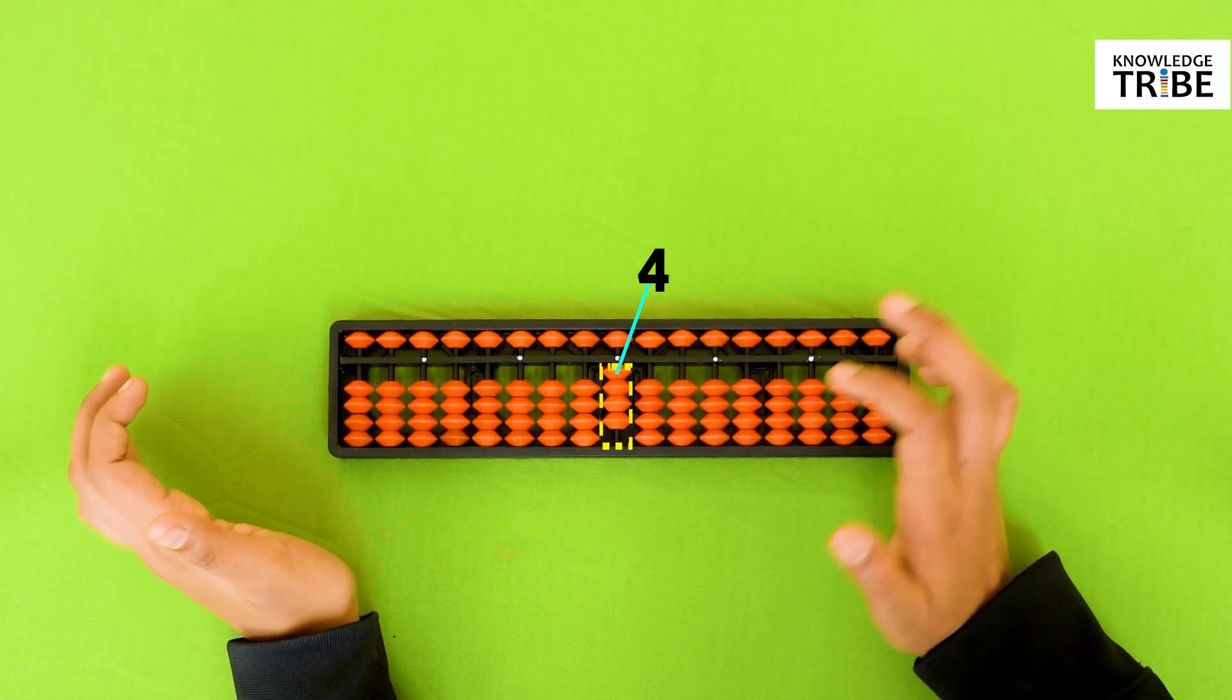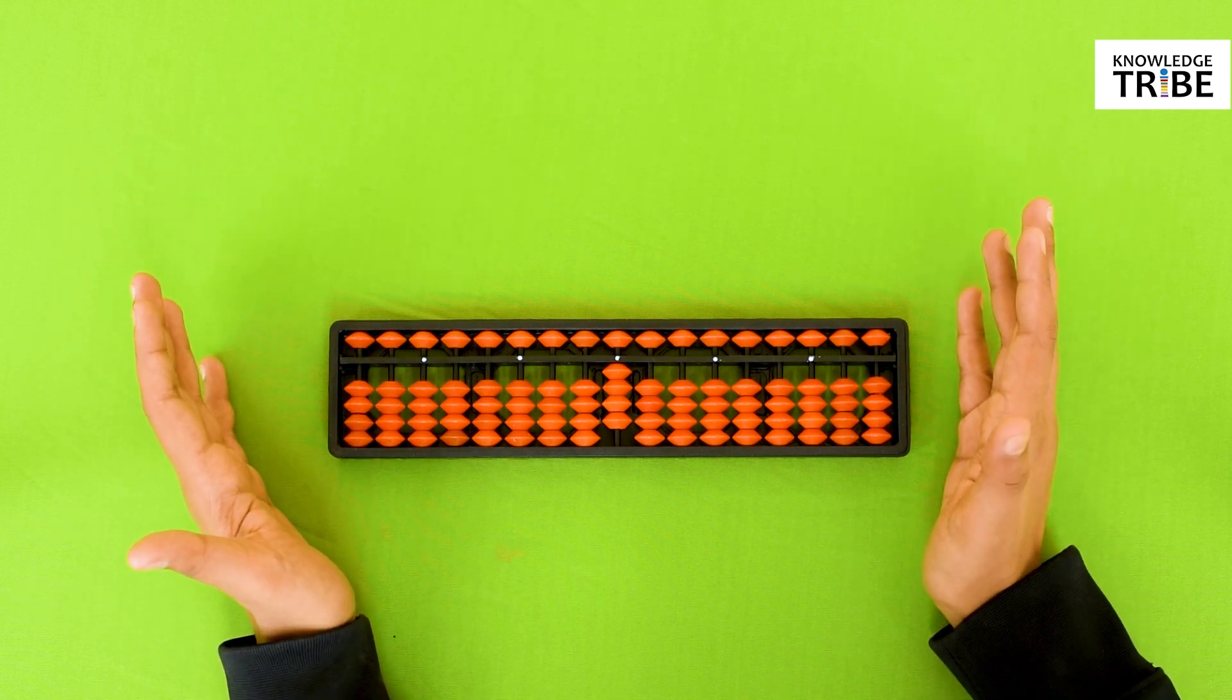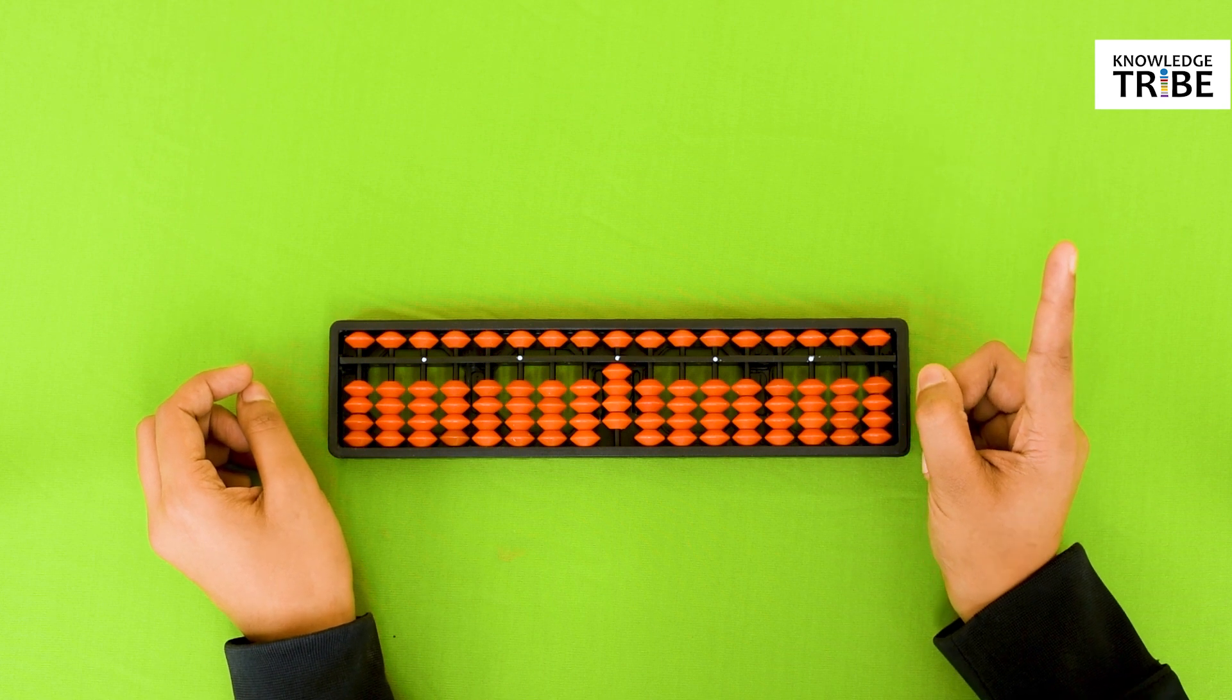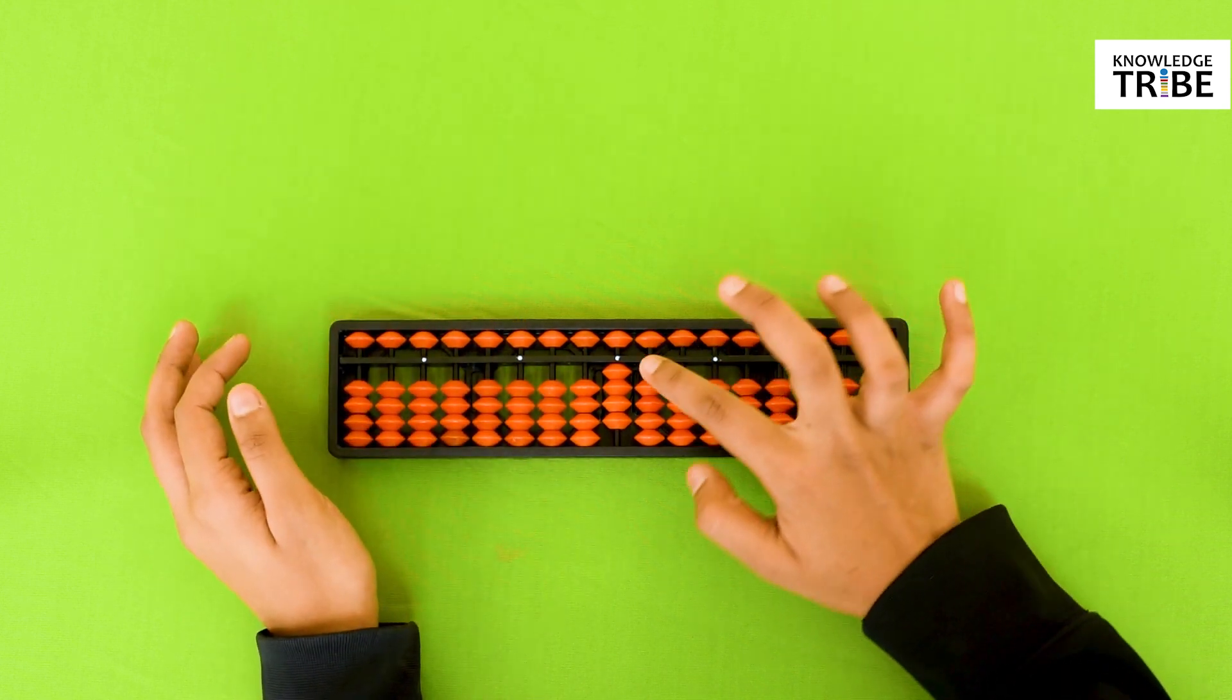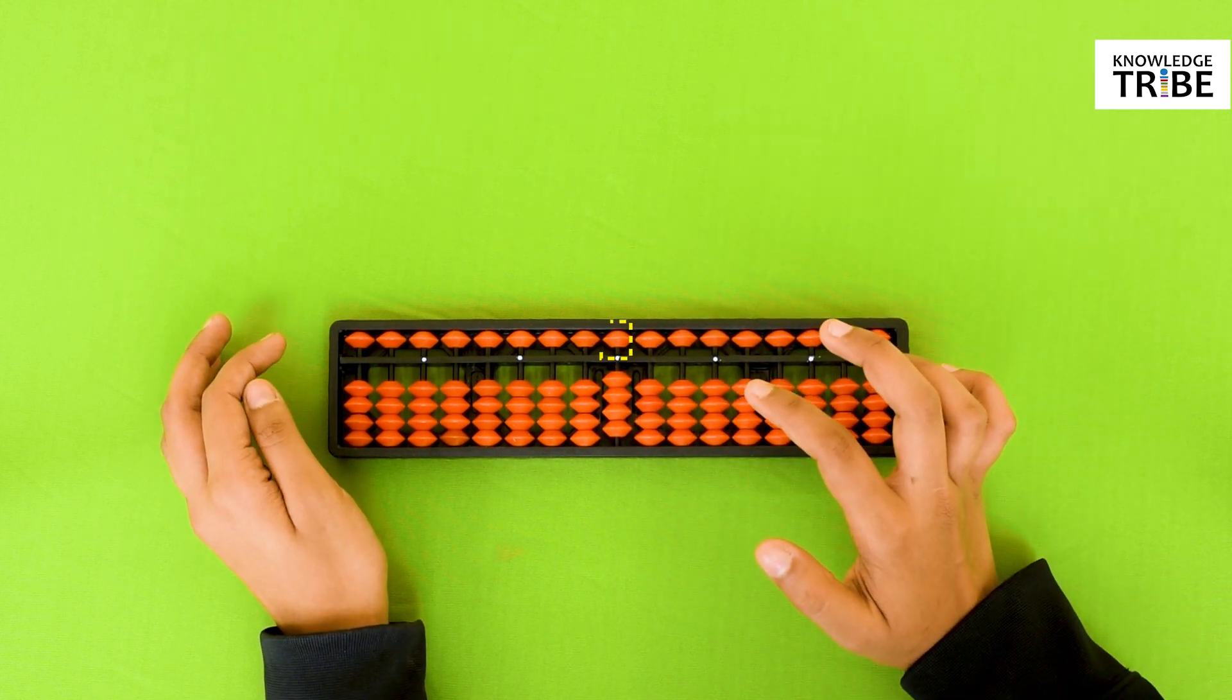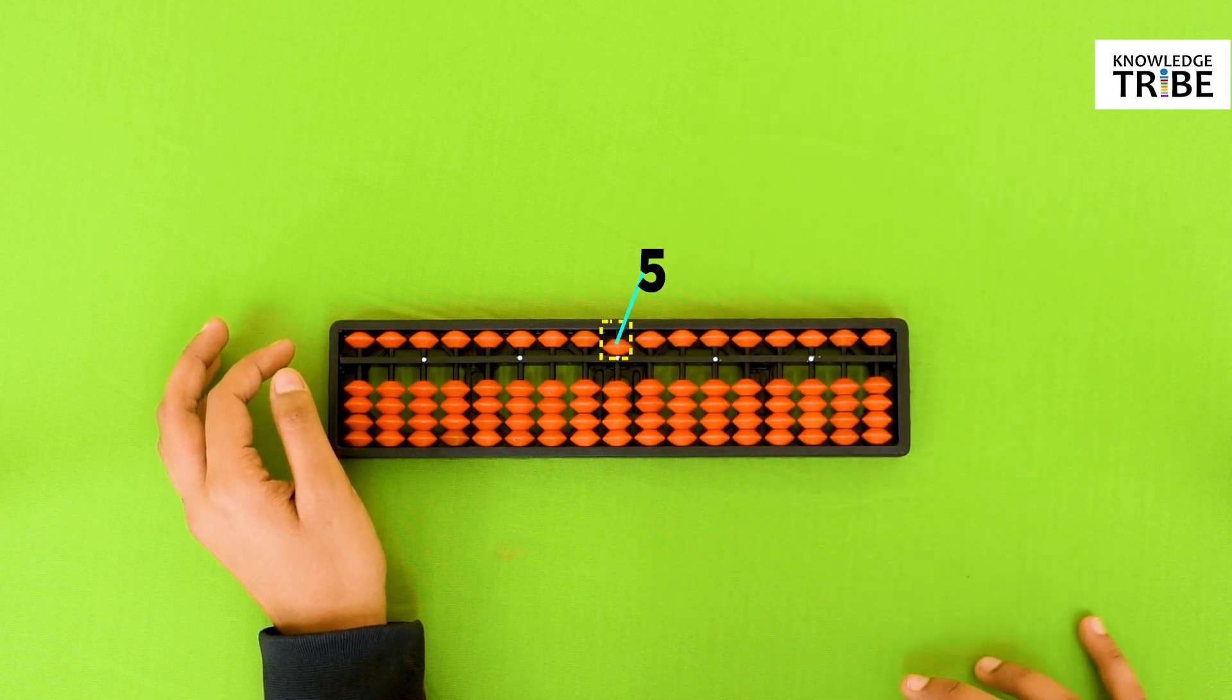Now tell me how to count 5? It is very simple. The value of 1 heavenly bead is 5. So to count 5, we have to move all the earthly beads away from the center beam and move the heavenly bead towards the center beam. Now this denotes 5 on an abacus.